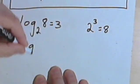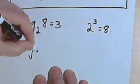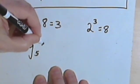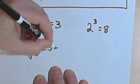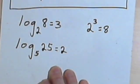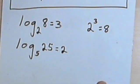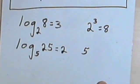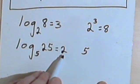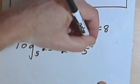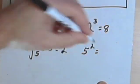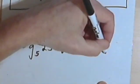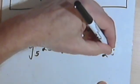What if I write the log base 5 of 25 equals 2? Well that's going to be the same as saying that this base, 5, raised to the exponent, the second power, so 5 squared, equals 25.